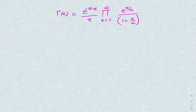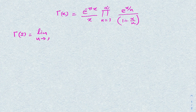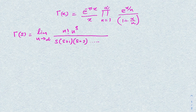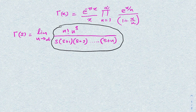In the previous video I proved the Gauss representation of the gamma function — I will put the link in the description. We know the Gauss representation: Γ(s) = lim(n→∞) n! · n^s / [s(s+1)(s+2)···(s+n)].